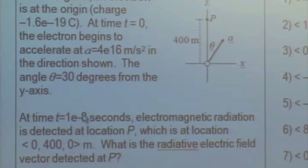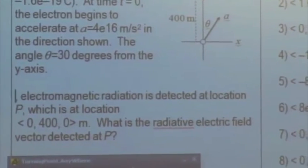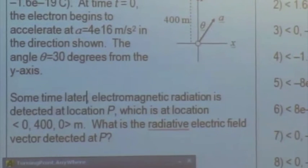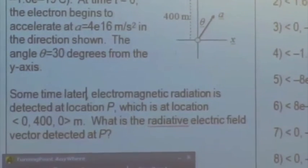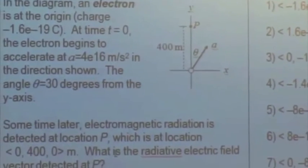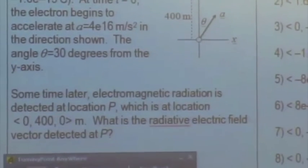And the angle of the acceleration from the y-axis here is 30 degrees. And so, sometime later, and it's not going to be one times ten to the minus eight seconds later, just say, sometime later. Electromagnetic radiation is detected at location p, which is 400 meters above the electron along the y-axis.